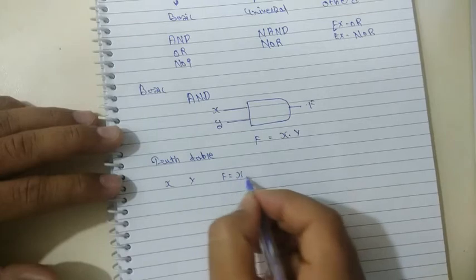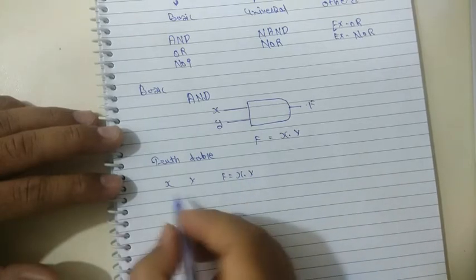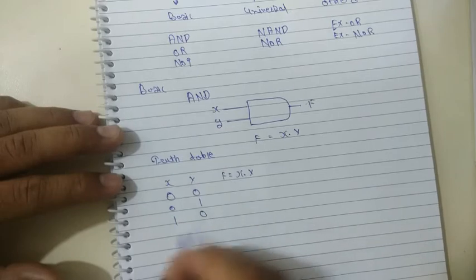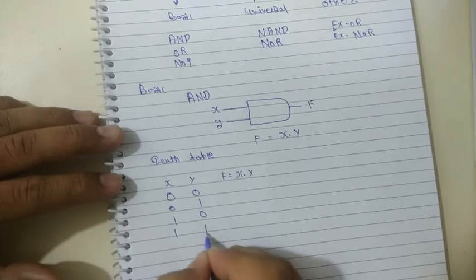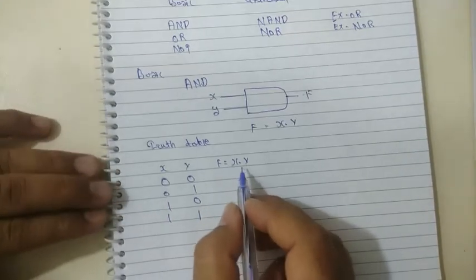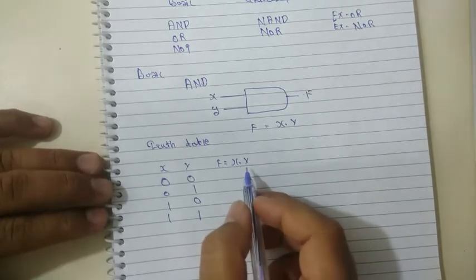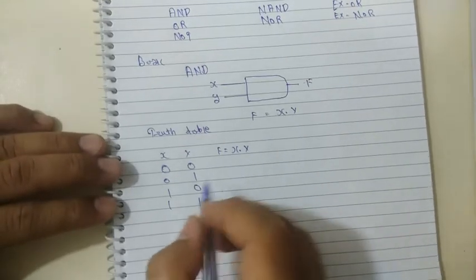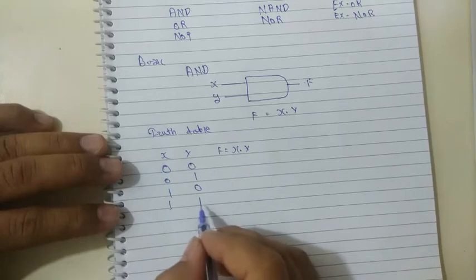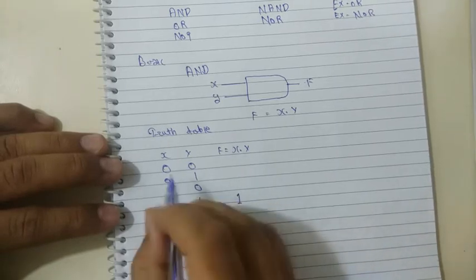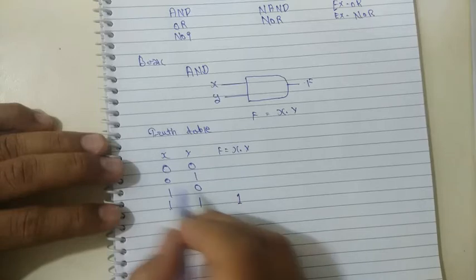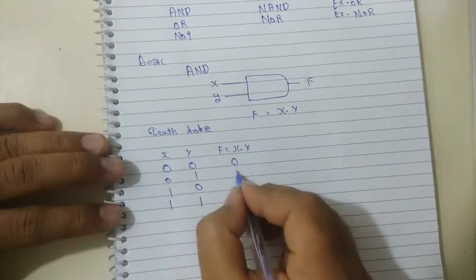For the truth table, output F is equal to X dot Y. The output F is the multiplication of X dot Y, or the AND operation. So the output will be 1 when both inputs X and Y are 1. If either input X or Y is 0, then the output will be 0.